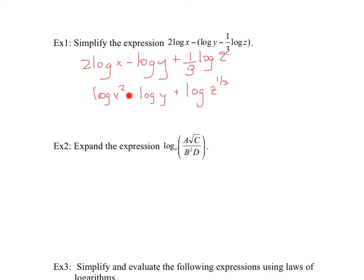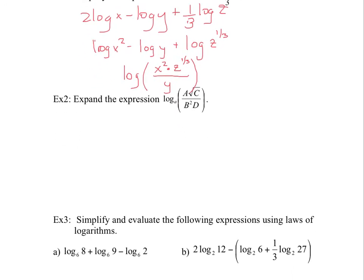Now combine everything under a single logarithm. Any term that was negative becomes a denominator — so y goes to the bottom — and positive terms become numerators. Combining using product and quotient rules gives: log of x squared times z to the power of one third, all divided by y. Negative log terms go to the bottom, positive terms go to the top.